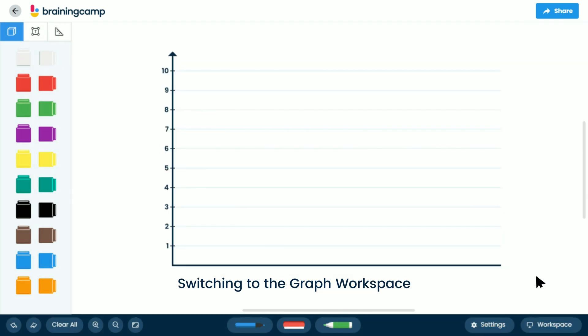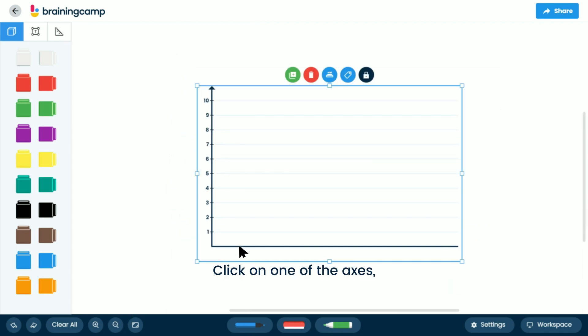Switching to the graph workspace allows you to create vertical and horizontal bar graphs. Click on one of the axes, then choose Flip from the list of choices.